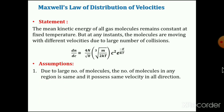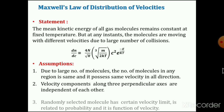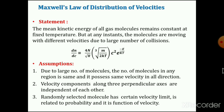This Maxwell-Boltzmann distribution of velocities is based on three assumptions. The first is: due to the large number of molecules, the number of molecules in any region is the same, and they possess the same velocity in all directions. The second assumption is that the velocity components along the three perpendicular axes are independent of each other. The third assumption is that a randomly selected molecule has a certain velocity limit, and that velocity limit is related to probability — therefore that probability is a function of velocity.